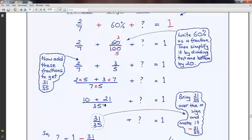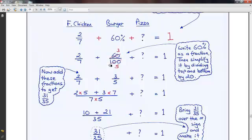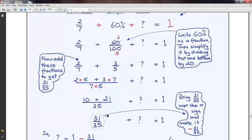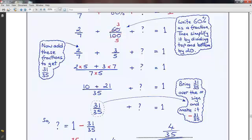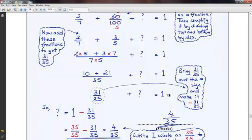Now, look what this now means, how this reads. It means thirty-one thirty-fifths of the students chose fried chicken and a burger altogether. So, if we now take this fraction over the equal sign and change it to minus thirty-one over thirty-five, we're taking it away from one, in other words.